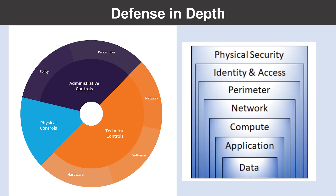Let's look into defense in depth. Defense in depth uses a layered approach to security rather than relying on a single perimeter. A defense in depth strategy uses a series of mechanisms to slow the advance of an attack or an attacker. Each layer provides protection so that if one layer is breached, a subsequent layer will prevent an attacker from getting unauthorized access to data. What you are seeing on the screen are the examples of these layers, so let me explain the security measures you need to take on each layer.